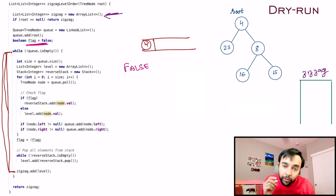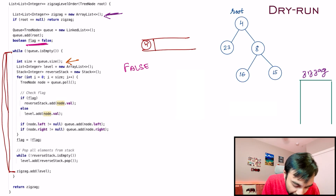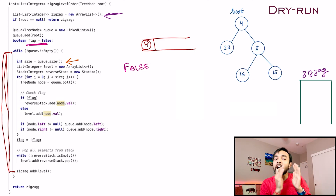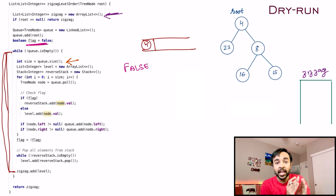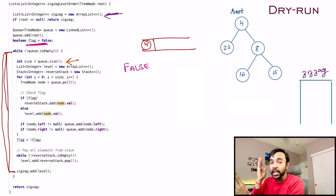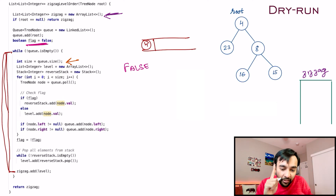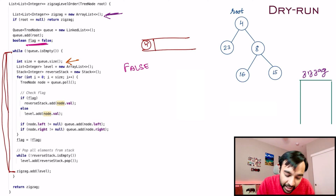Right now you just have 4 in your queue. Get the size of the queue — this size tells you how many nodes are in a level, which lets you decide when the level is over and when to flip the flag. Right now the size of the level is only 1 because you only have node 4.